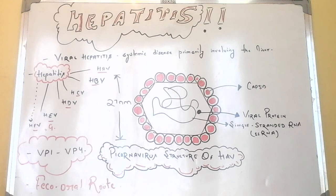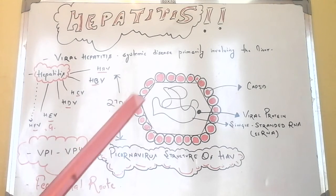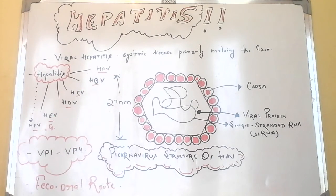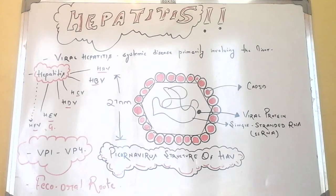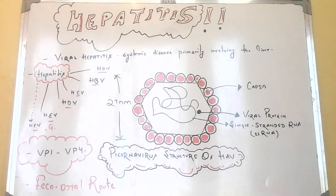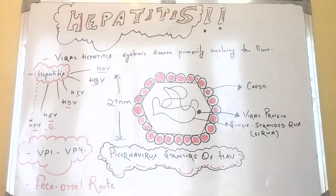Here we can see a diagram of Hepatitis A virus. Infection with HAV causes Hepatitis A, that is infectious hepatitis. Hepatitis A is responsible for 20 to 25 percent of clinical hepatitis in the developing countries of the world, but the incidence is much lower in developed countries. Hepatitis A is usually a benign, self-limiting disease and has an incubation period of 15 to 45 days.